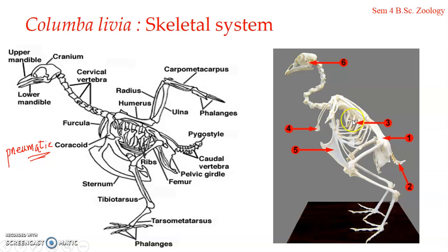The appendicular skeleton includes the limbs — the forelimbs, which are the bones that support the wings, and the hind limbs — as well as the girdles: the pectoral and the pelvic girdle. The limbs are connected to the axial skeleton by way of the girdles.